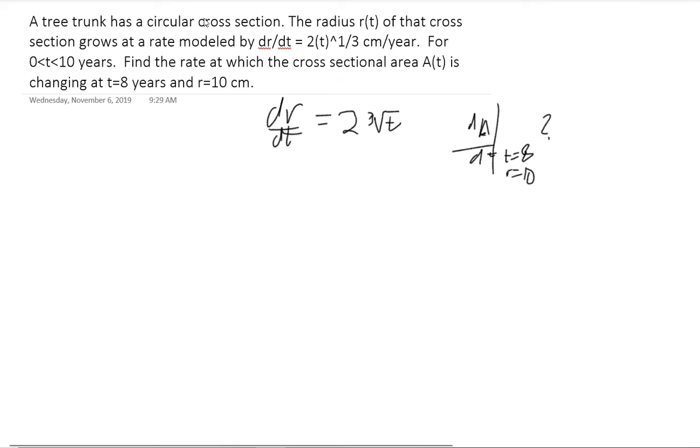So what's the area? We're not dealing with volume, this is the first time that we're actually dealing with area. Cross-sectional area. It's a circle, so area of the circle is just A equals πr². We'll take the derivative of that: dA/dt equals 2πr times dr/dt.